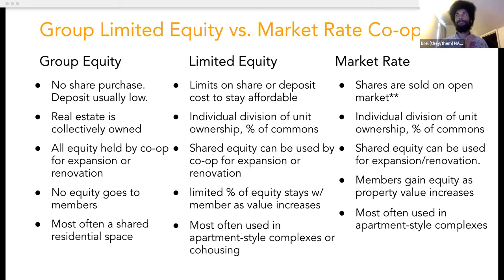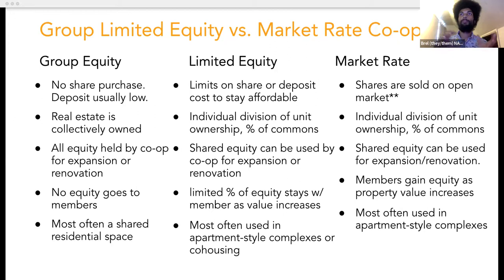On the other end of the spectrum, there are group equity housing cooperatives. In group equity housing cooperatives, the structure is a lot more like a rental structure or tenants in common. There isn't usually a share purchase, but there is usually a security deposit that's charged, which is typically fairly low. The real estate is all collectively owned — so the individual member, by signing a membership agreement, doesn't gain a personal equity position in the corporation; they instead are able to collectively manage the equity of the co-op. Since all of the equity is held by the co-op, it can all be used for future expansion or renovation, but none of that is going to go to individual members. These are most frequently shared residential spaces — often single room occupancy — but this model can also apply to apartment-style or condominium-style co-ops.